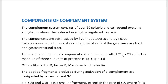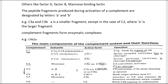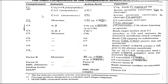The complement components include Factor D, Factor B, mannose-binding lectin (MBL), and MBL-associated serine protease (MASP). The components run from C1 to C9 along with Factor B, Factor D, and MBL. C1 has subunits C1q, C1r2, and C1s2; C2 is a monomer; C3 has alpha and beta chains; C4 has alpha, beta, and gamma chains; and C5 is a monomer. A bar symbol indicates the active form.